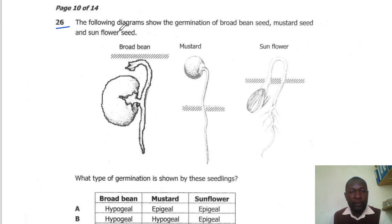Question 26. The diagram below shows the germination of broad beans, mustard seed, as well as sunflower seed. What type of germination is shown by these seedlings? Broad beans, this is hypogeal, mustard seed, this is epigeal, and sunflower seed is also showing epigeal germination. So the correct answer here is A.